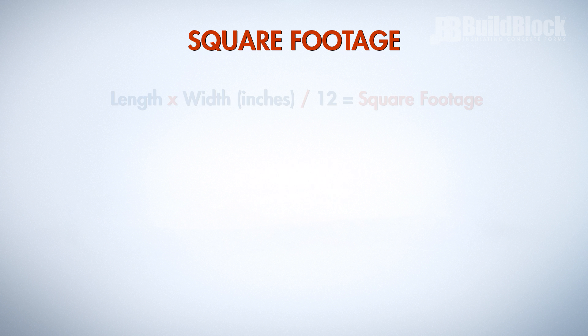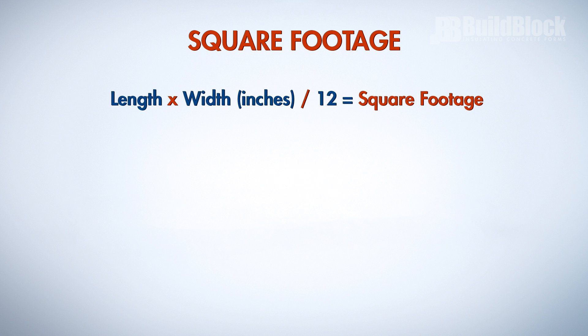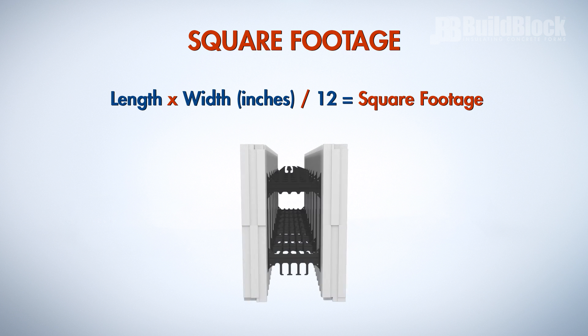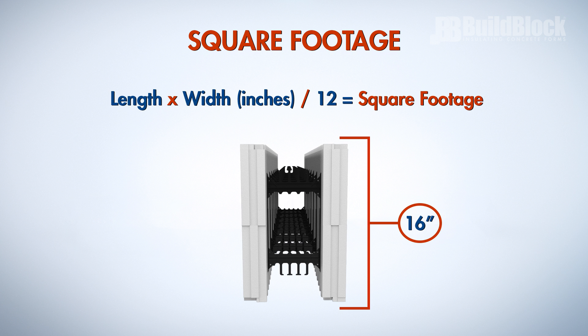Square footage equals length times width in inches divided by 12. Keep this basic formula in mind when calculating square footage. When estimating wall height, remember that all BuildBlock ICFs are 16 inches tall.